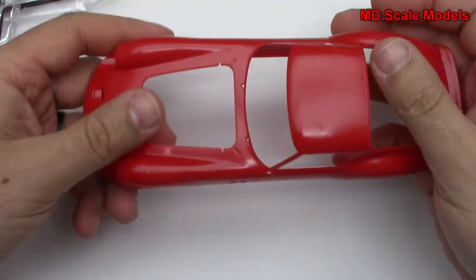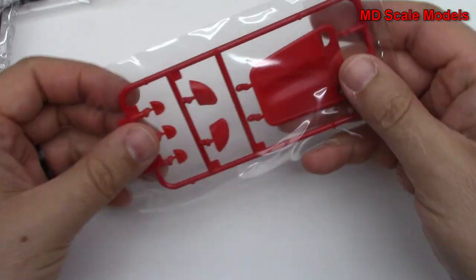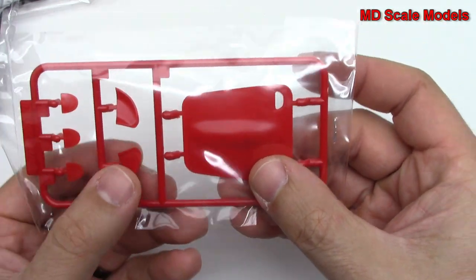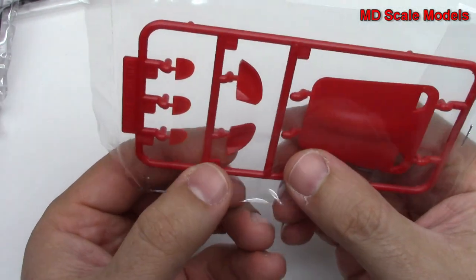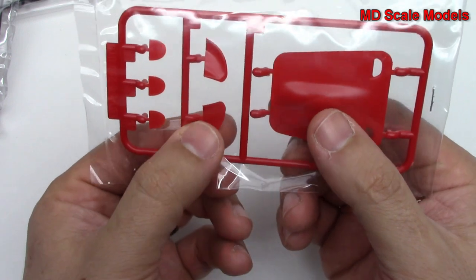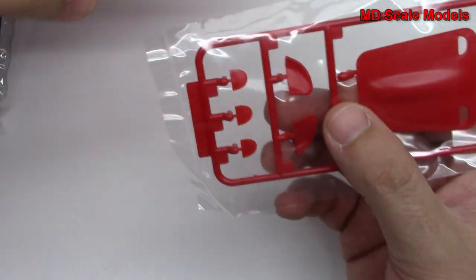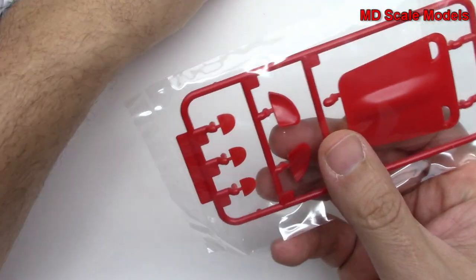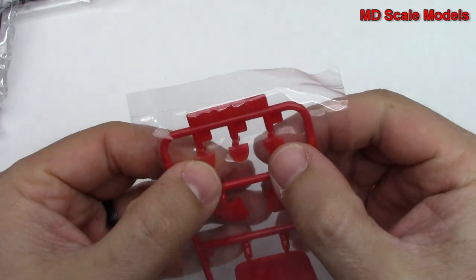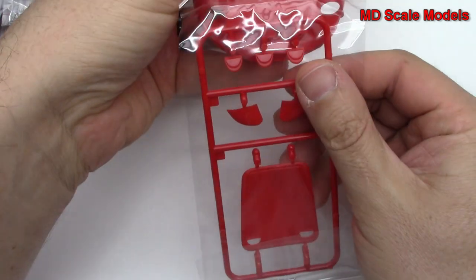It's a nice body there. Here is our hood and looks like maybe some scoops there. Those are the three scoops there for the front.